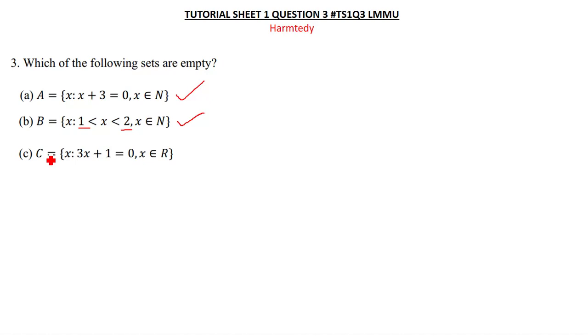Let's look at C. C is saying 3x plus 1 is equal to 0, and they are saying x is a member of real numbers. So we make x the subject, so meaning we're going to have negative 1 over 3.